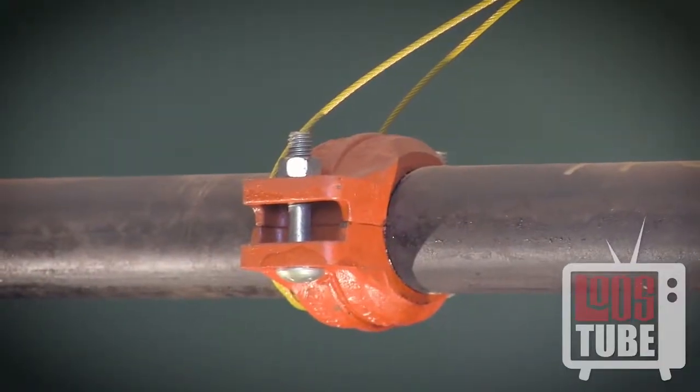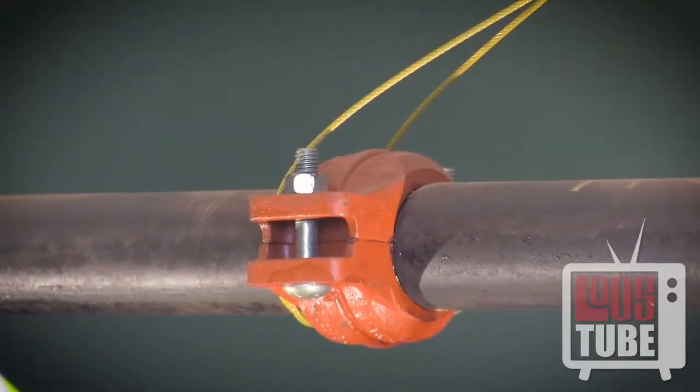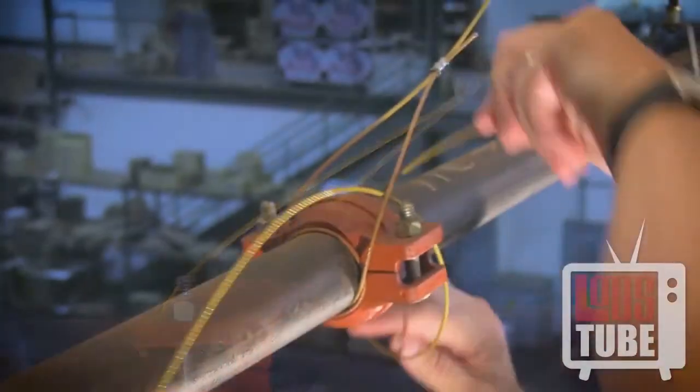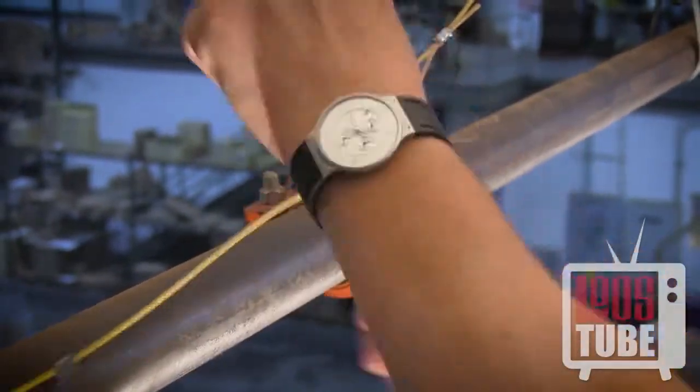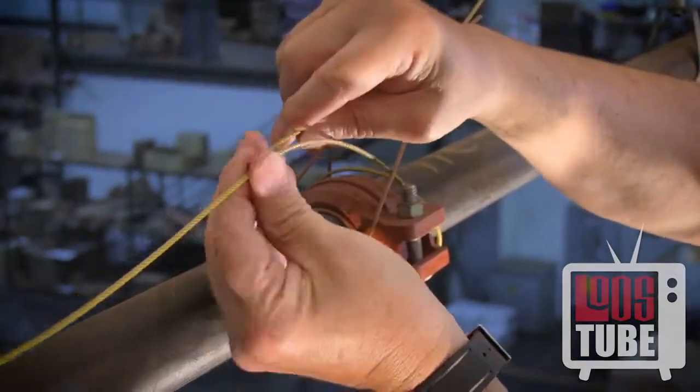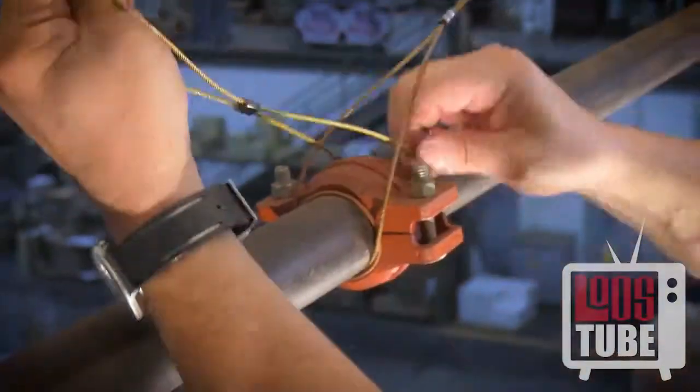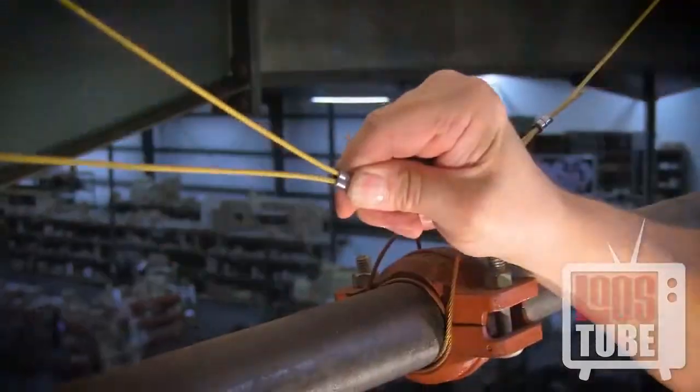Cable sway bracing works in tension only, which means that two braces must always be applied opposing each other. Repeat this process in the same manner in the opposite direction, ensuring that the cable is looped around the opposite side of the coupling or clamp.